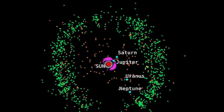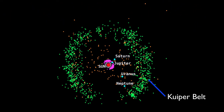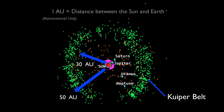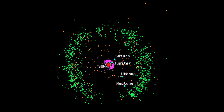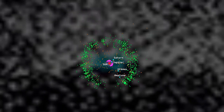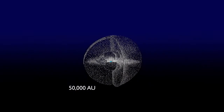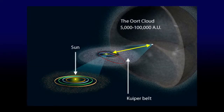For the outer solar system, we have the Kuiper belt, which lies just beyond the orbit of Neptune from about 30 to 50 AU from the Sun, where 1 AU is the distance between the Sun and Earth. Then there's the outer outer solar system, extending to maybe 50,000 AU or much more, within which lies the Oort cloud — a collection of some trillion or more objects just barely held by the Sun's gravitational pull. So, we have the asteroid belt, the Kuiper belt, and the Oort cloud.